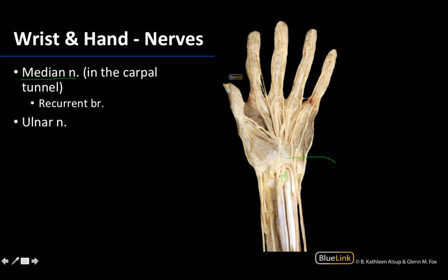There is a very small branch right here — drawing a little arrow so you can see this little bitty thing right here. This is the recurrent branch of the median nerve. That is the efferent branch providing innervation to the thenar compartment of intrinsic hand muscles. It is very small, but if you see a small nerve branch in the thenar compartment, you can be sure you're looking at the recurrent branch returning back to the median nerve.